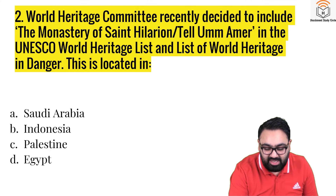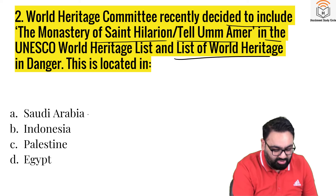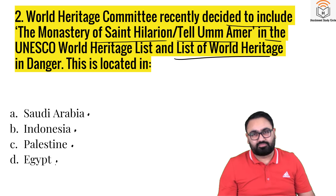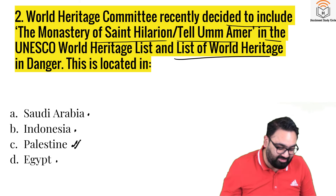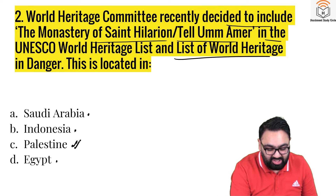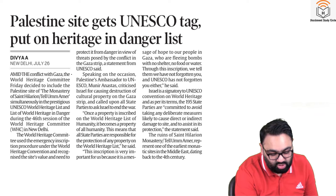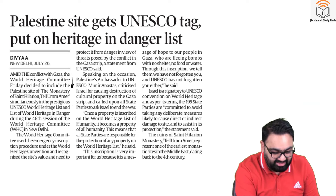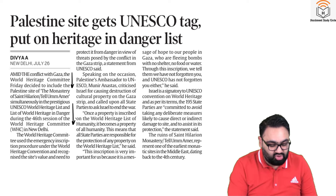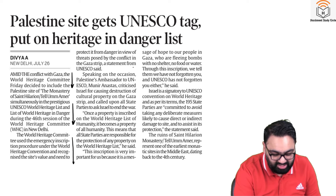Next, question number two. The World Heritage Committee recently decided to include the Monastery of St. Hilarion, Tel Um Amir, in the UNESCO World Heritage list and the list of World Heritage in Danger. Where is this located? Saudi Arabia, Indonesia, Palestine, or Egypt? This famous site is in Palestine. UNESCO has given it World Heritage status. This was covered in all newspapers today, including the Indian Express, amid the ongoing conflict with Palestine. The World Heritage Committee, which had its meeting in Delhi, decided to include this site using the emergency inscription procedure under the World Heritage Convention.